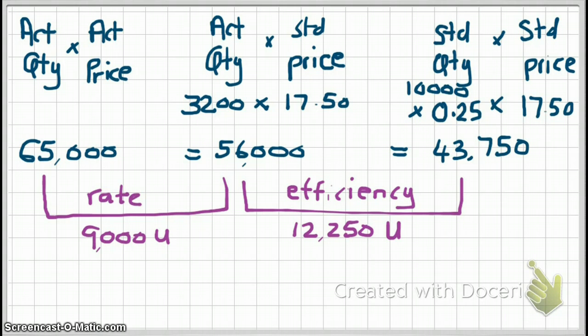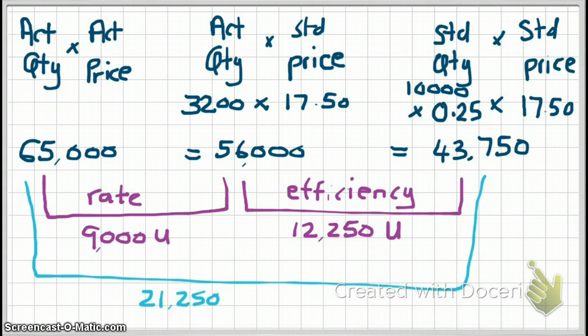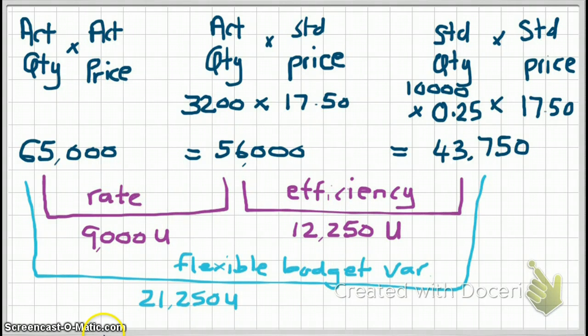With direct labor variances, when you add up your rate and efficiency variances, you get a flexible budget variance of $21,250, and again it's unfavorable. You can either combine the efficiency and rate variances, or calculate the entire flexible budget variance directly: we expected a standard cost of $43,750, but ended up with actual costs of $65,000, giving you $21,250 — an unfavorable variance.